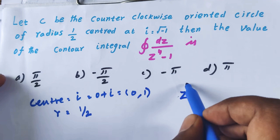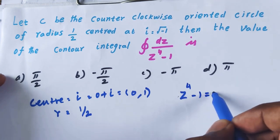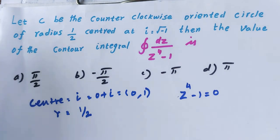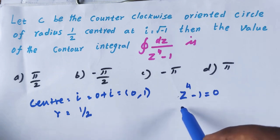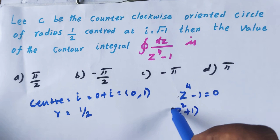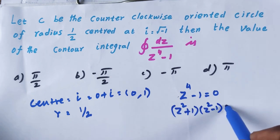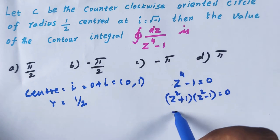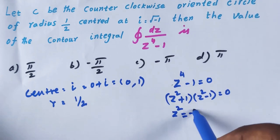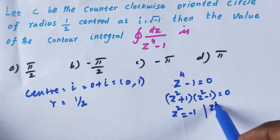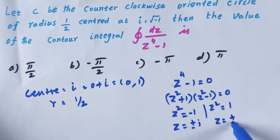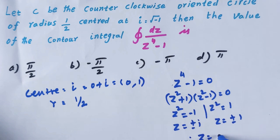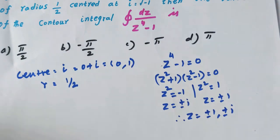So, setting z⁴ minus 1 equal to 0 to find the non-analytic points. z⁴ - 1 = (z² + 1)(z² - 1) = 0. From z² + 1 = 0, we get z² = -1, so z = ±i. From z² - 1 = 0, we get z² = 1, so z = ±1. Therefore the four values are z = 1, -1, i, -i — the 4th roots of unity.